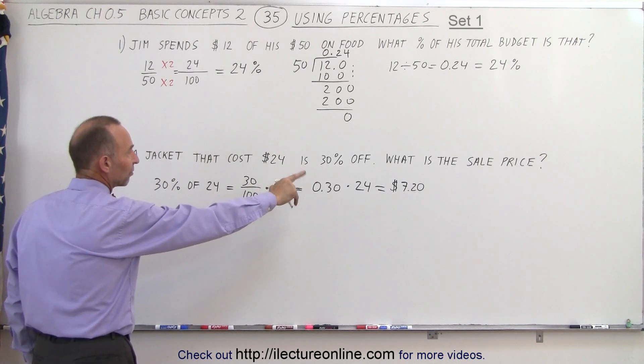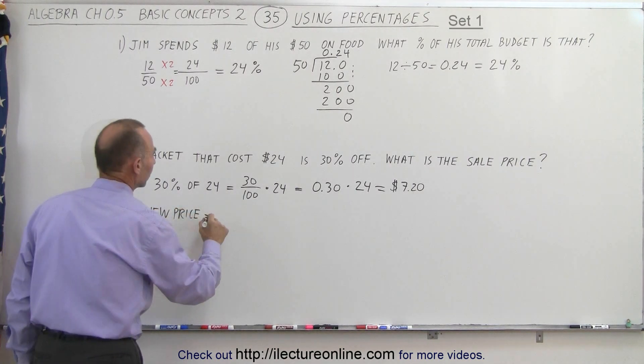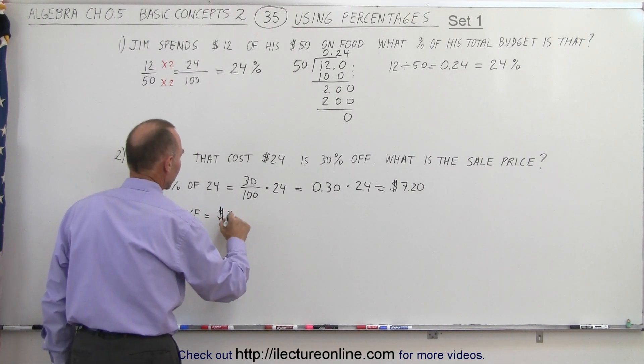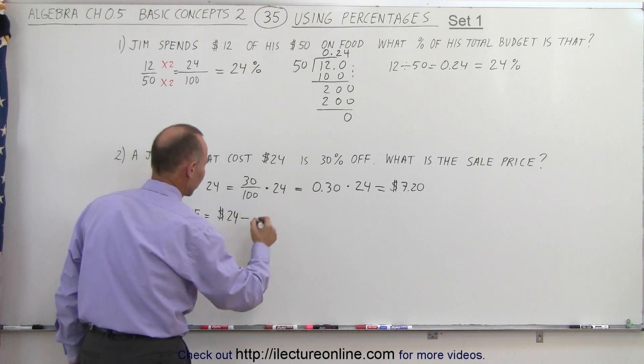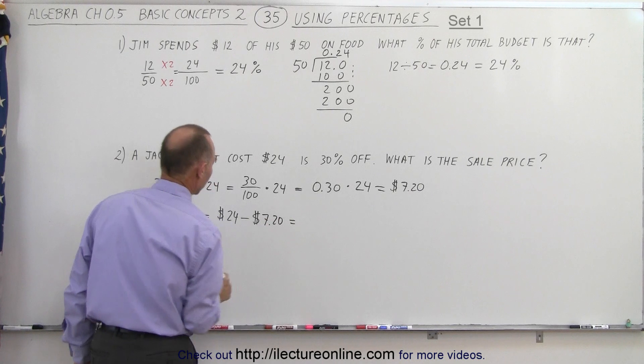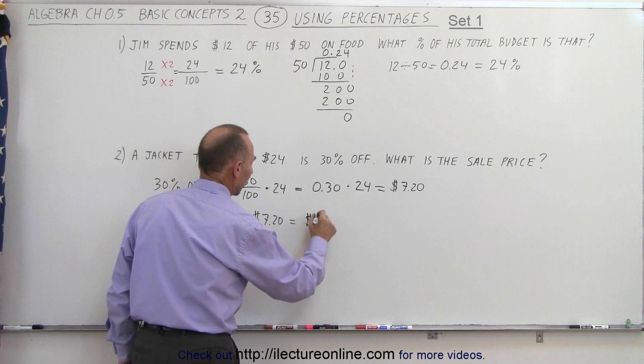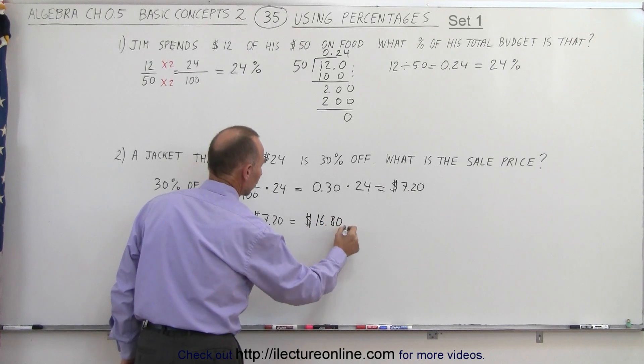We get $7.20 off, so the new price equals the original price of $24 minus $7.20 off. That would be $16.80 as the new price.